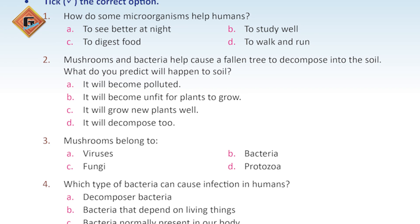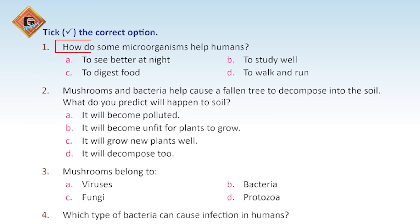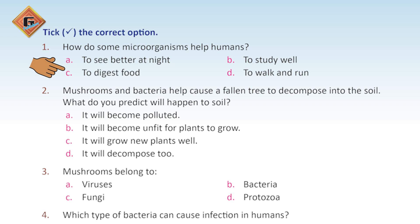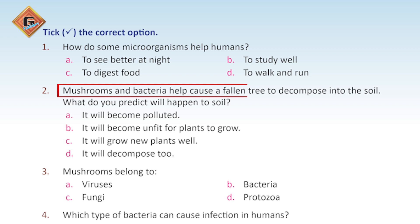Now, tick the correct option: how do some microorganisms help humans? Students, you remember that you studied that microorganisms are in our intestine and help our food digest. So C is the correct option — to digest food. Mushrooms and bacteria also help cause a fallen tree to decompose into the soil.